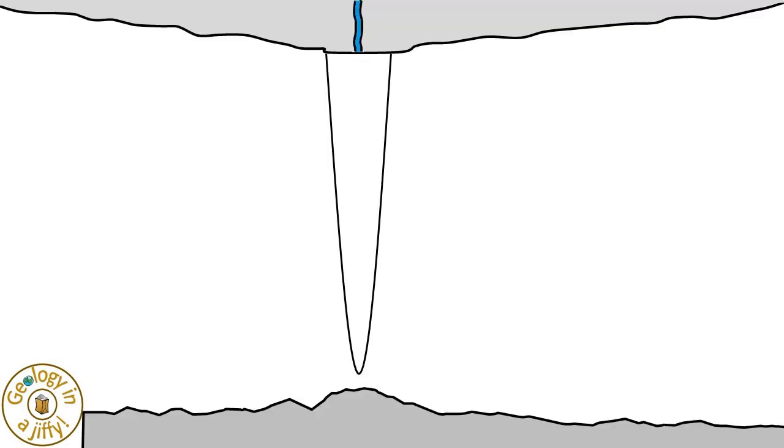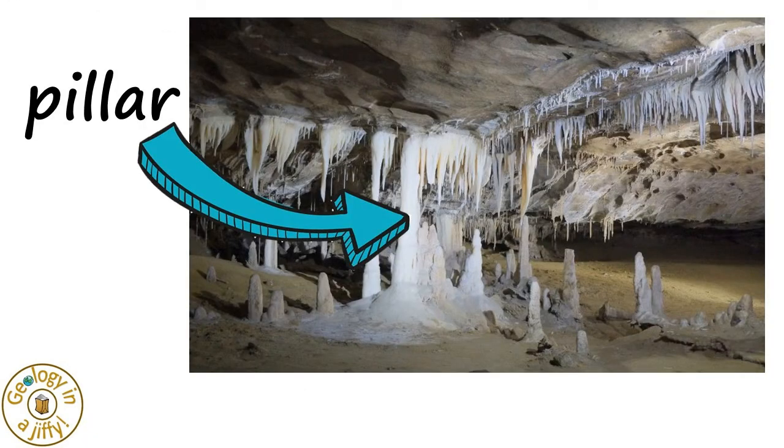Many stalactites grow so long that they eventually touch the stalagmite that grows below them, forming what is called a column, or pillar.